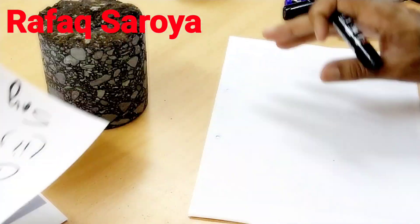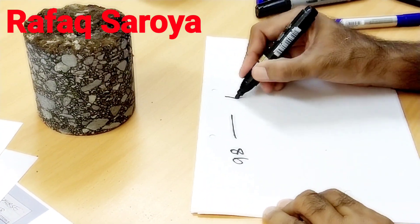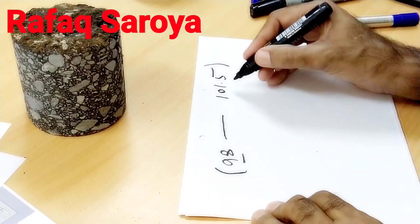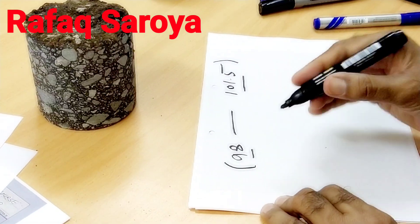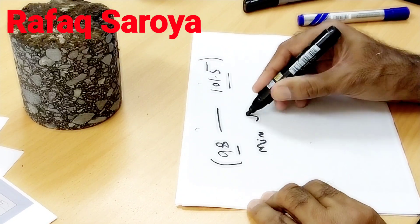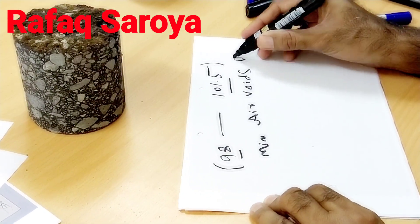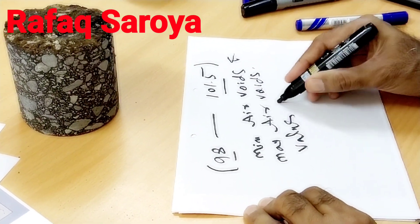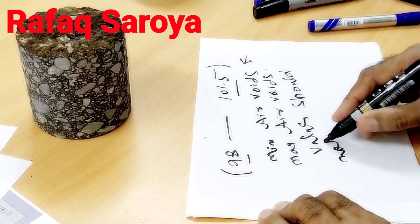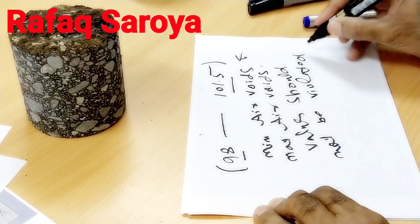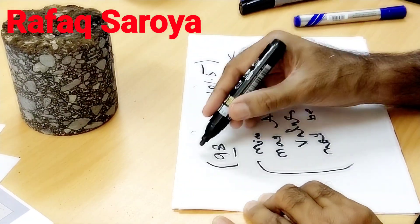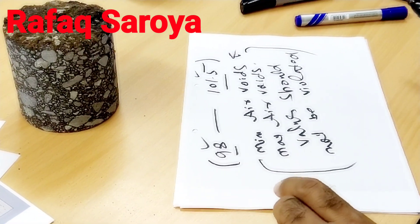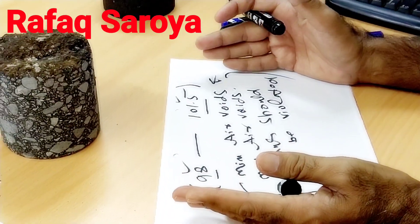Next, regarding this minimum of 98 and maximum of 101.5 — in my next video I will explain why this range is taken. Just for your brief understanding now: there are minimum air voids and maximum air voids values that should not be violated. I will explain in the upcoming video why a minimum and maximum are necessary.